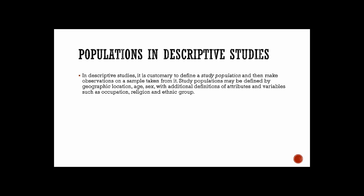In descriptive studies, it's customary to define a study population and then make observations on a sample taken from it. These populations can be defined by geographic location, age, gender, etc. In field studies, it may be desirable to use a population defined by an administrative boundary, such as a district or state.